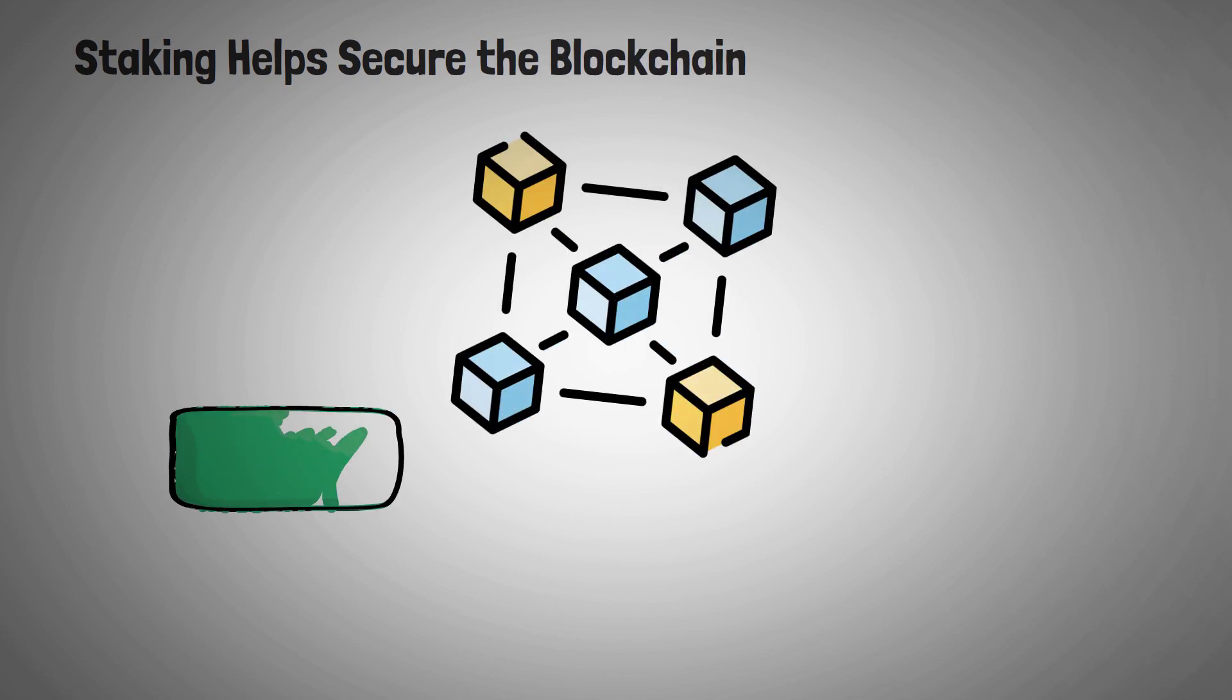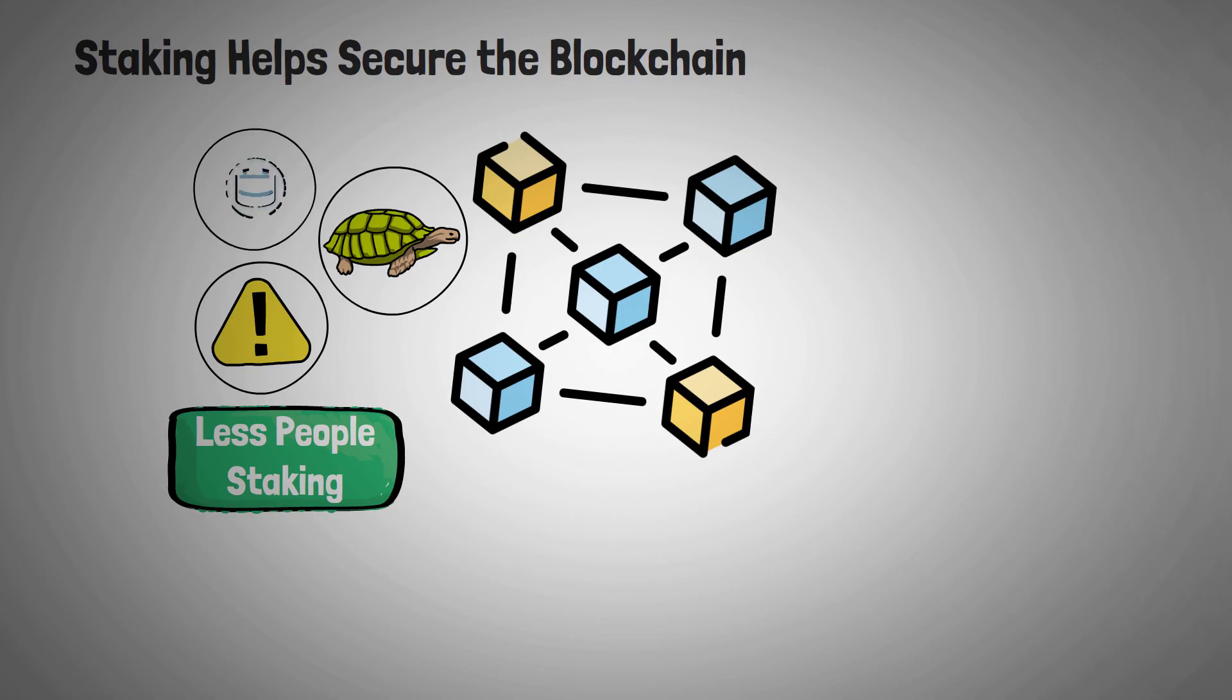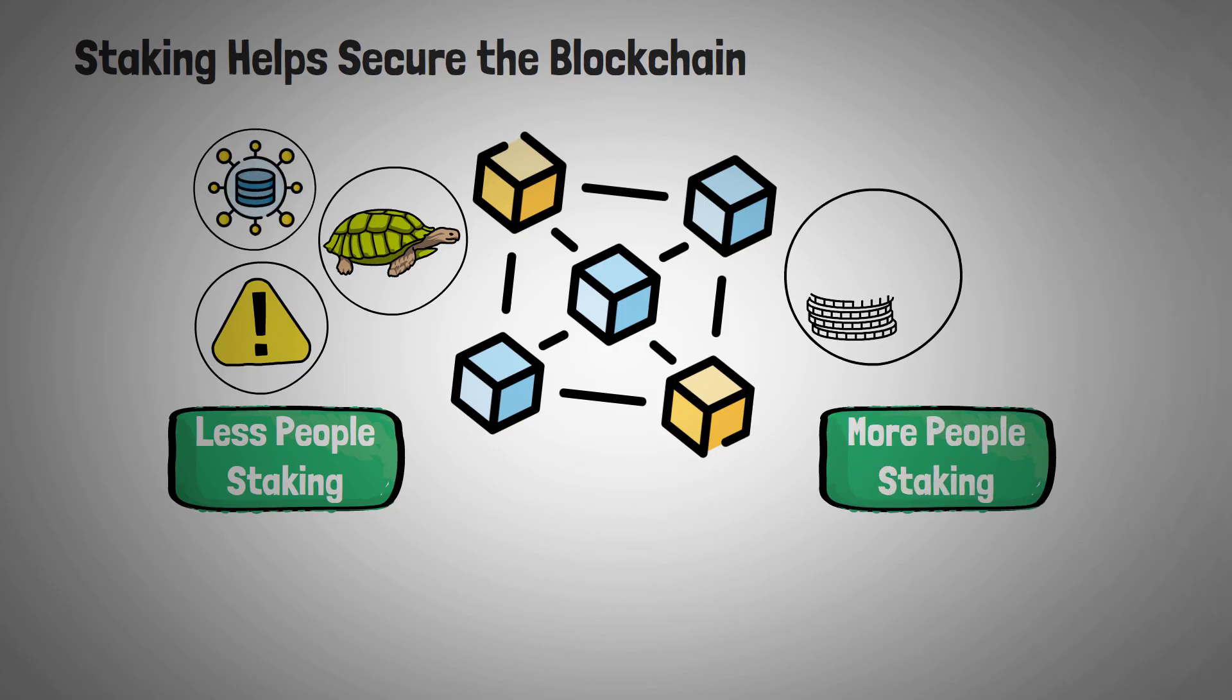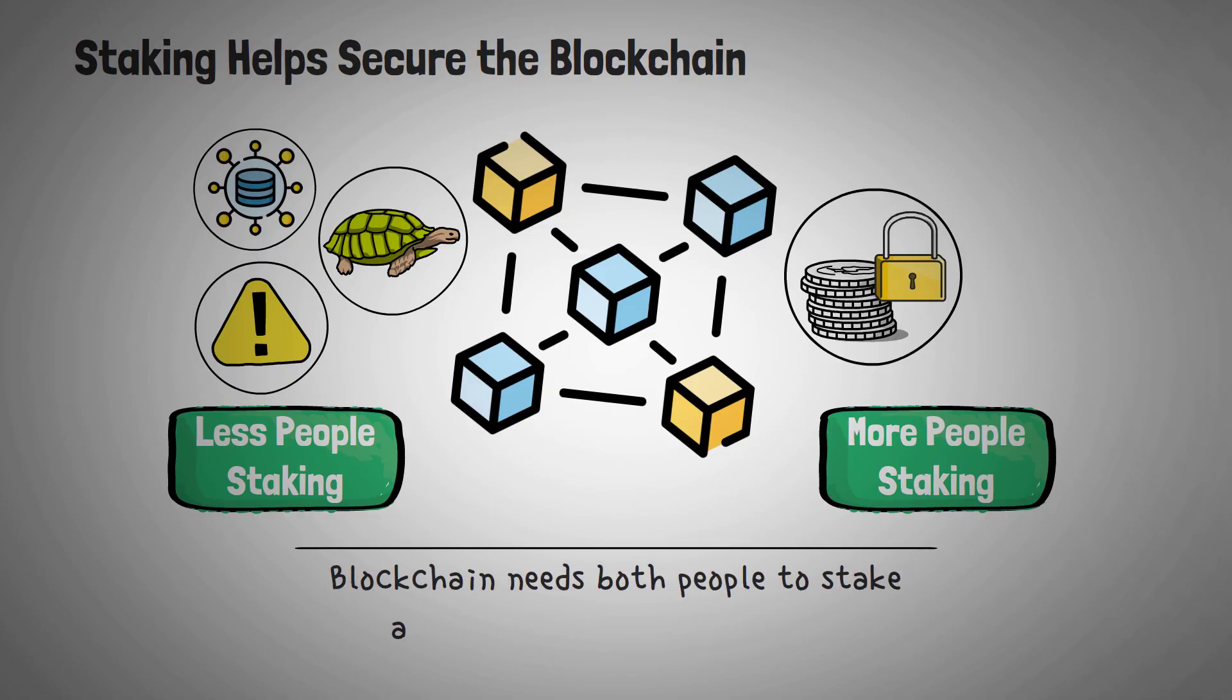Remember how we said staking helps secure the blockchain? If not enough people are staking, transactions will be slower, the network will be less secure, and it will be more centralized. But if people are staking, then they aren't able to use those assets in the ecosystem to do things like trading and lending and buying. So a blockchain needs both people to stake and people to use the network. Liquid staking solves this problem by letting people do both.